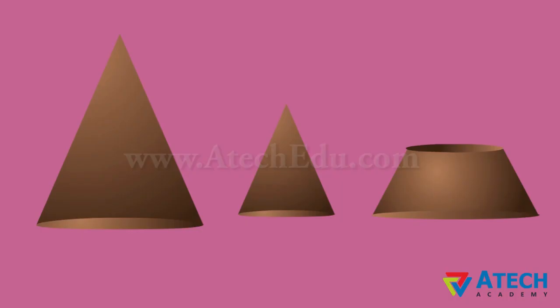What do we find? We find two parts. The upper part is a cone while the lower part is a unique solid object.